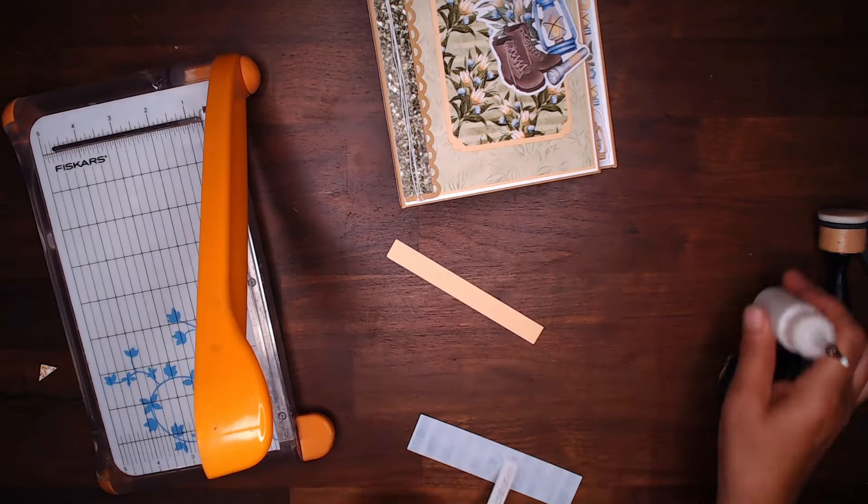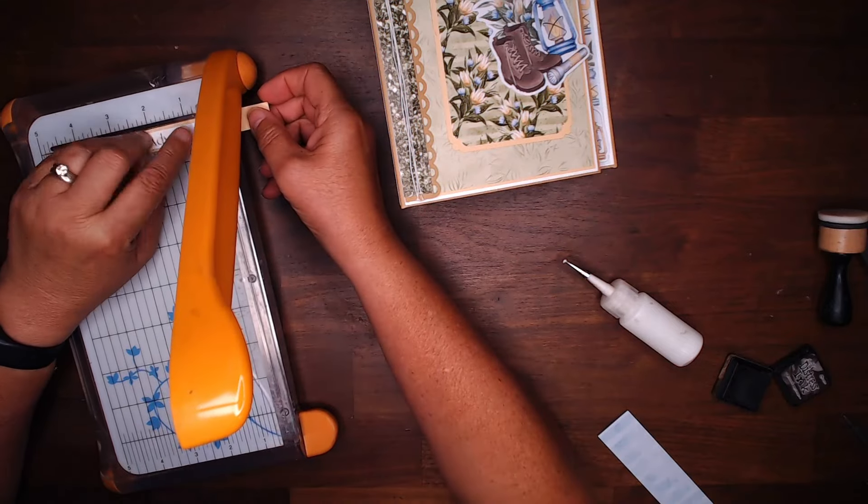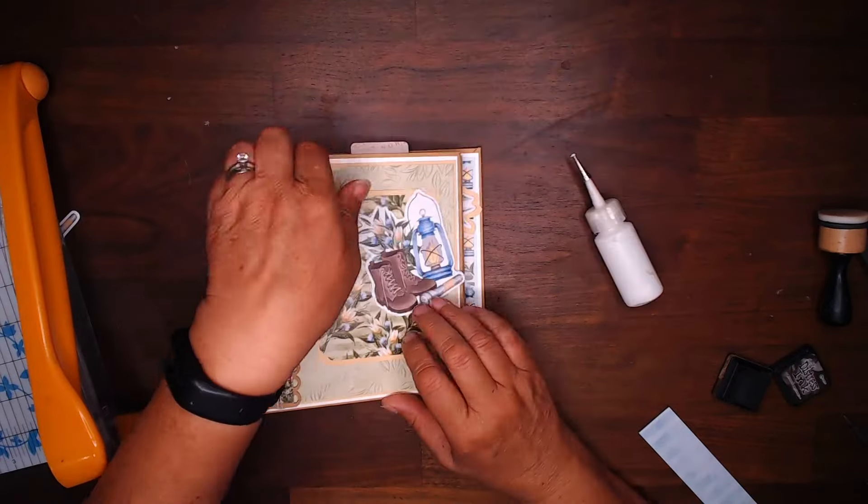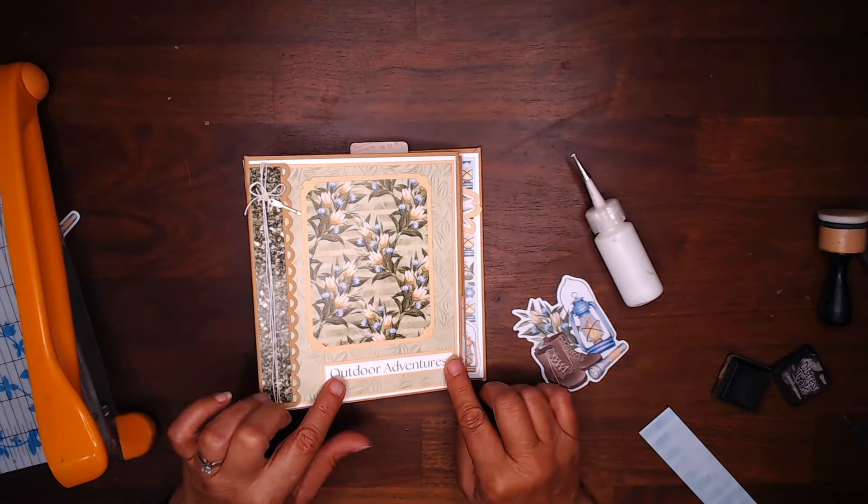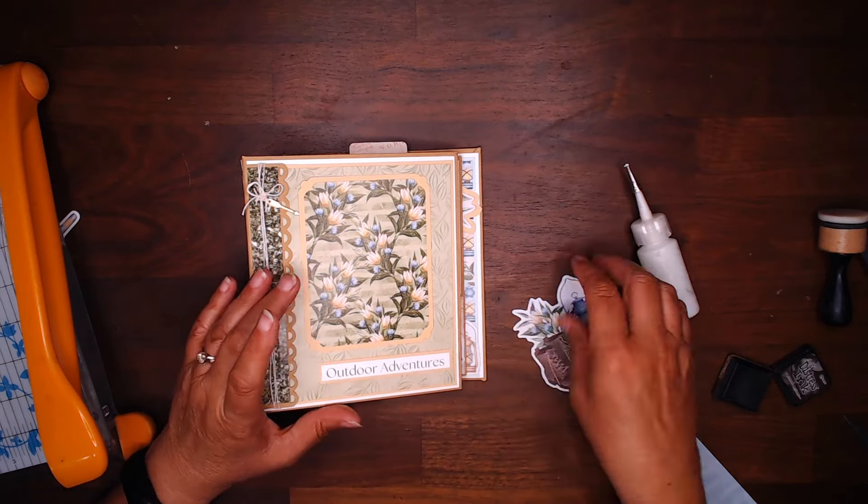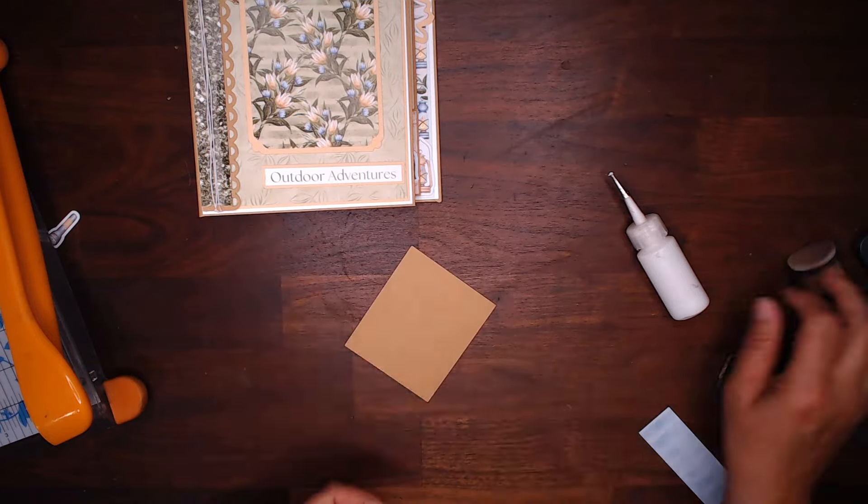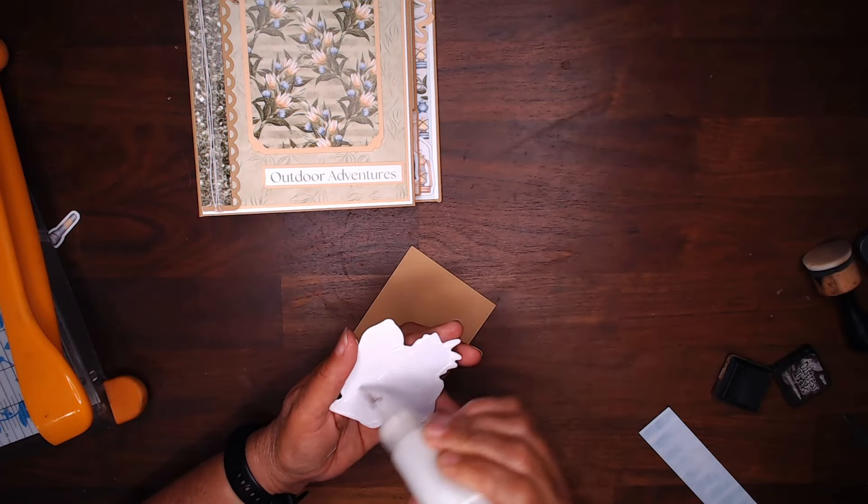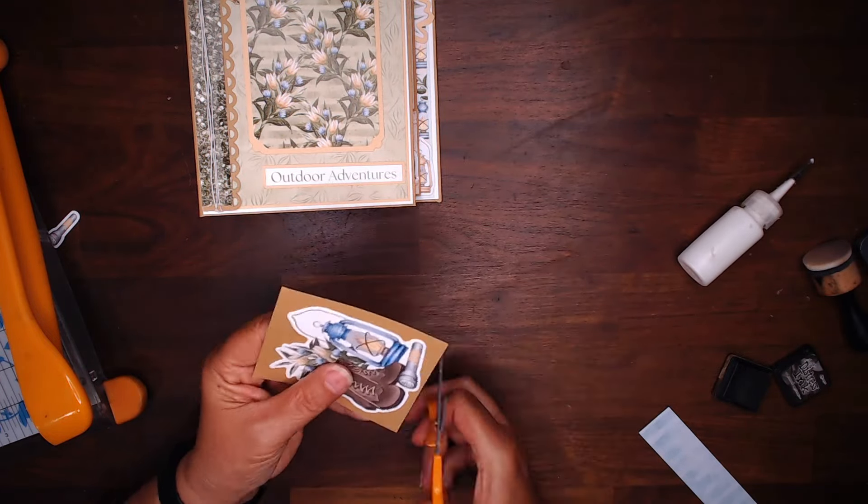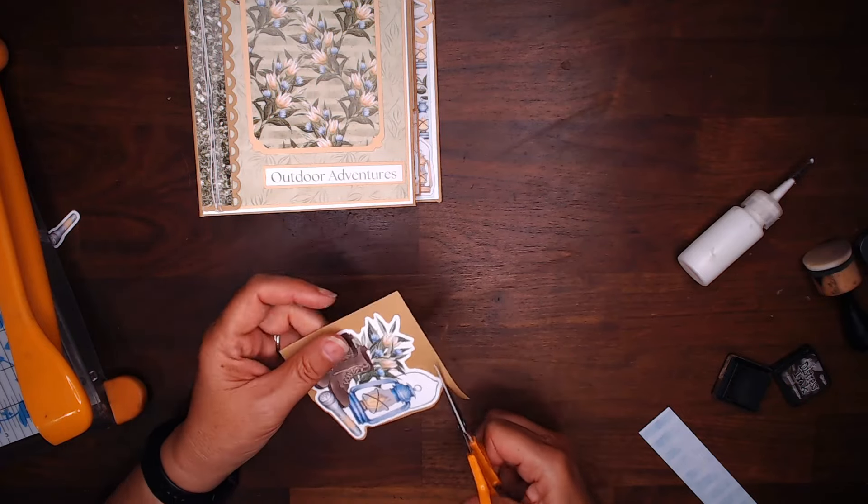I could have made a fishtail, but there's so much going on with this with the edge punch and the corner rounding. I didn't want another thing. And then here again, I want to have this piece of ephemera stand out. So, I glue it onto a piece of the craft color cardstock, cut around it, and that'll help it stand out a little bit on top of the paper we have.